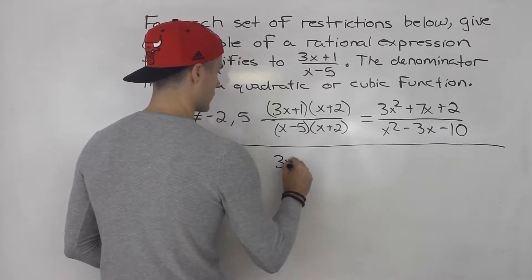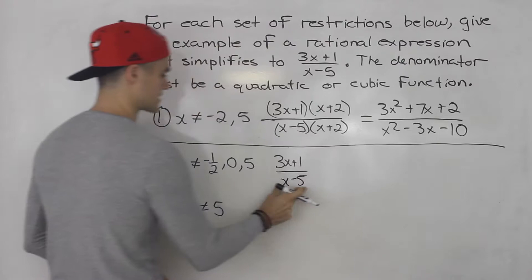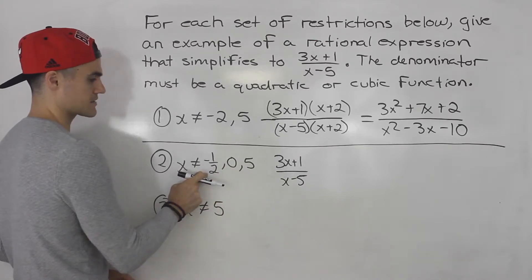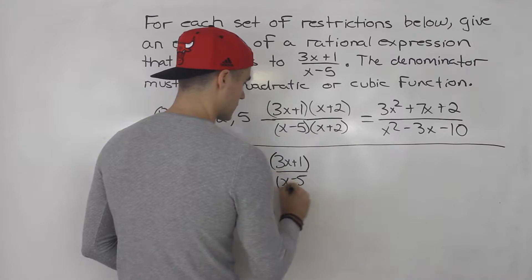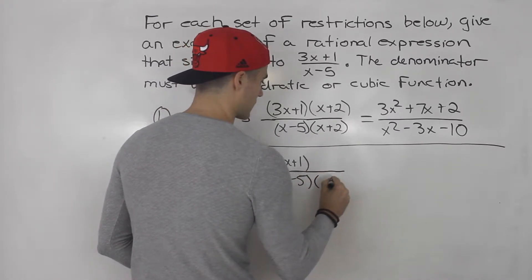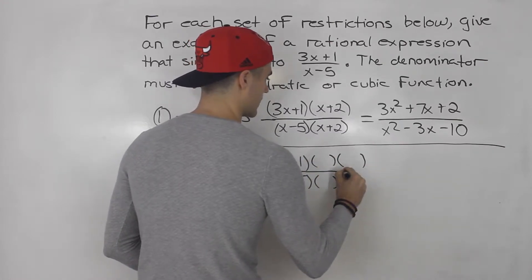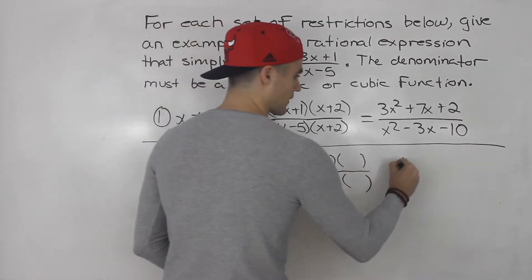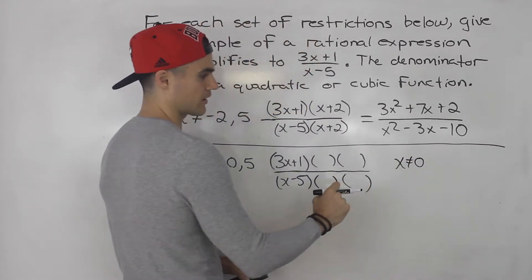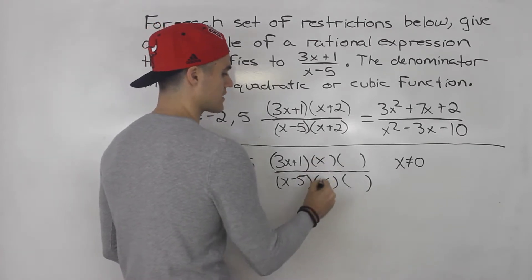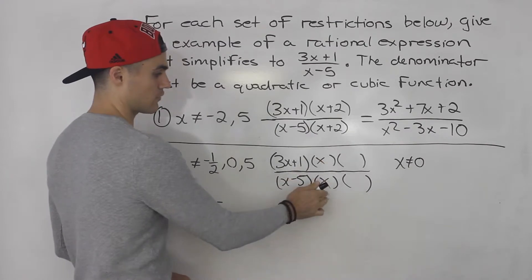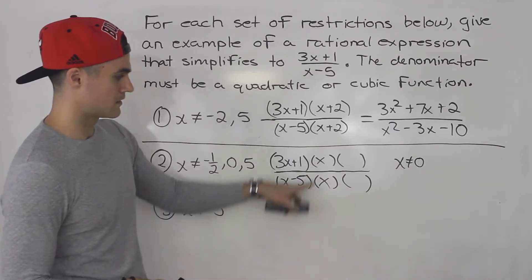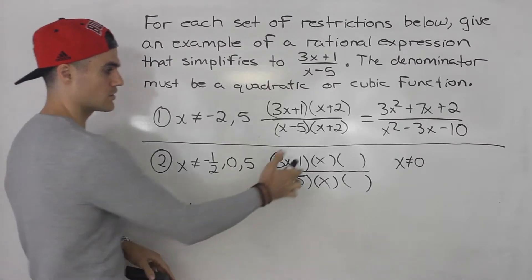For number 2, let's write what we're simplifying to: (3x+1)/(x-5). The x minus 5 takes care of the restriction x cannot equal 5. But we also have x cannot equal 0 and x cannot equal negative one half, meaning there were two factors that canceled. For x cannot equal 0, there's nothing to bring to the other side — it's just x by itself. So there was an x in the numerator and an x in the denominator that canceled. Whenever you have x by itself, x cannot equal 0.